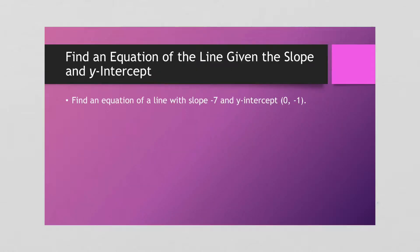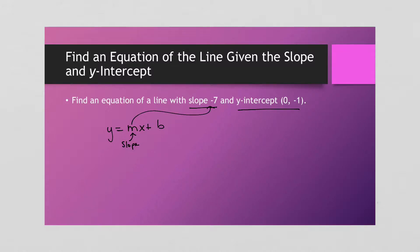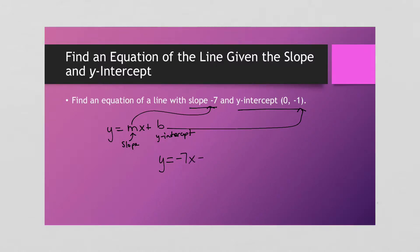All right, so this one says find an equation of a line with a slope of 7 and a y-intercept of (0, -1). So if you'll remember, we're going to use y = mx + b. The m is our slope, which we get from there, and b is our y-intercept. So y is equal to — substituting in the slope — negative 7x, don't forget your x, minus 1. And I got the negative 1 from right there. This is it. That's all I need.